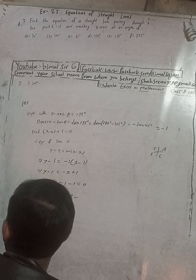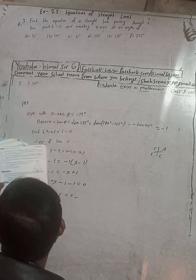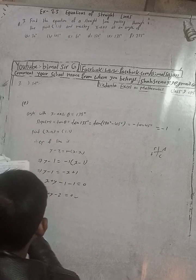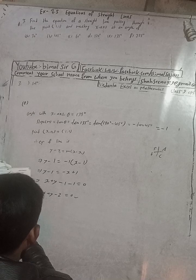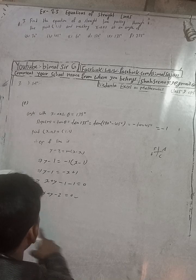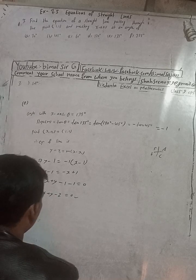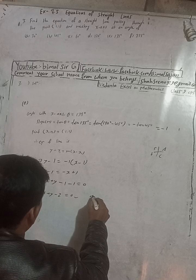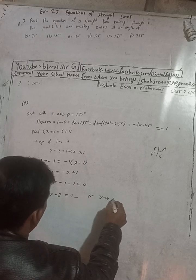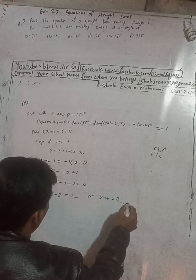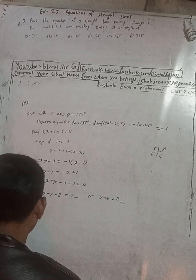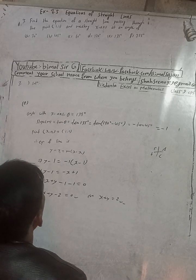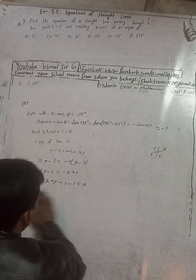The book answer for part (e) is x plus y minus 2 equals 0. You can also write it as x plus y equals 2. Both forms are the same and correct.